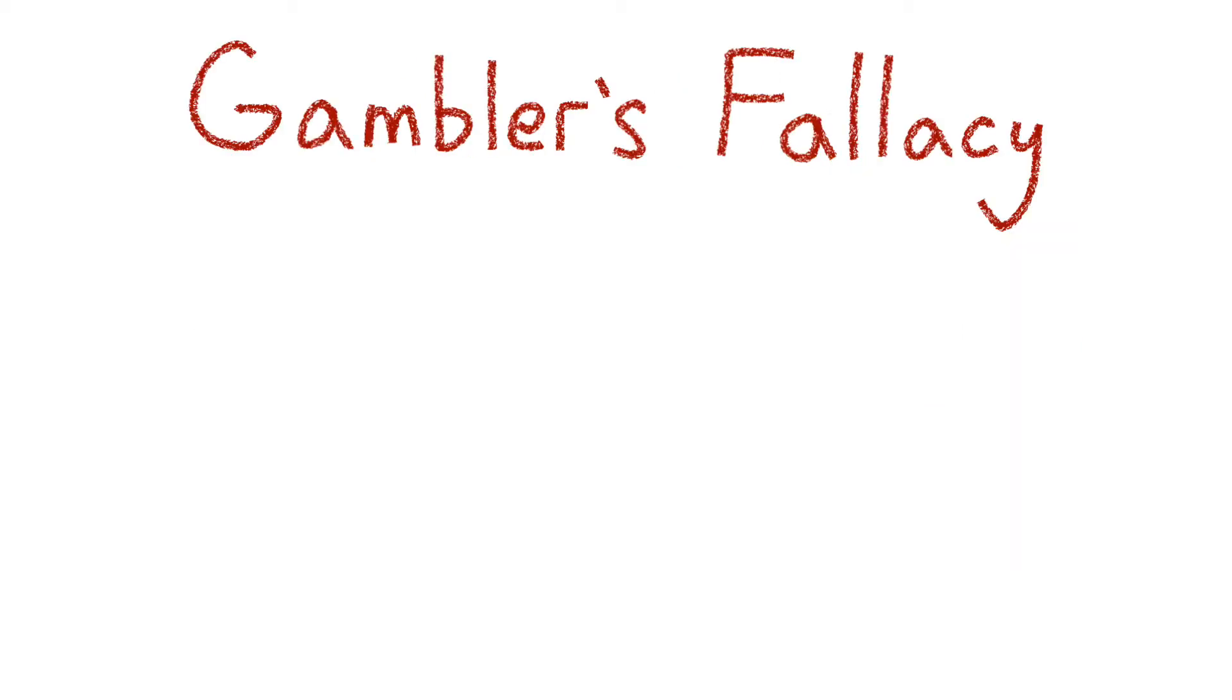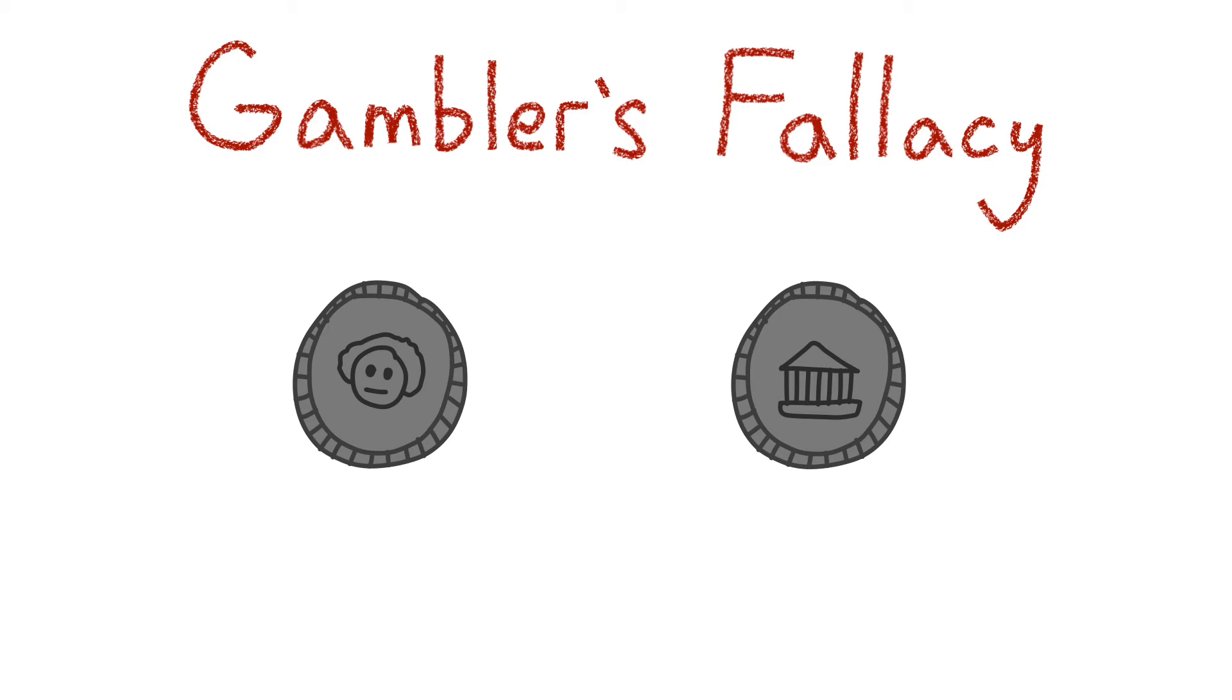The gambler's fallacy is when we see patterns that don't exist related to gambling. For example, you might be playing a game that involves flipping a coin, and you swear you see a pattern on how often the coin is flipping heads or tails, but in reality there is no pattern at all.